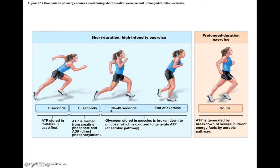Within 30 to 40 seconds, glycogen stored in muscles is broken down into glucose and oxidized to generate ATP through anaerobic glycolysis. However, the buildup of lactic acid from anaerobic metabolism can start to form acidosis within the bloodstream. This is characteristic of short-duration, high-intensity exercise, where the body eventually switches to anaerobic metabolism.